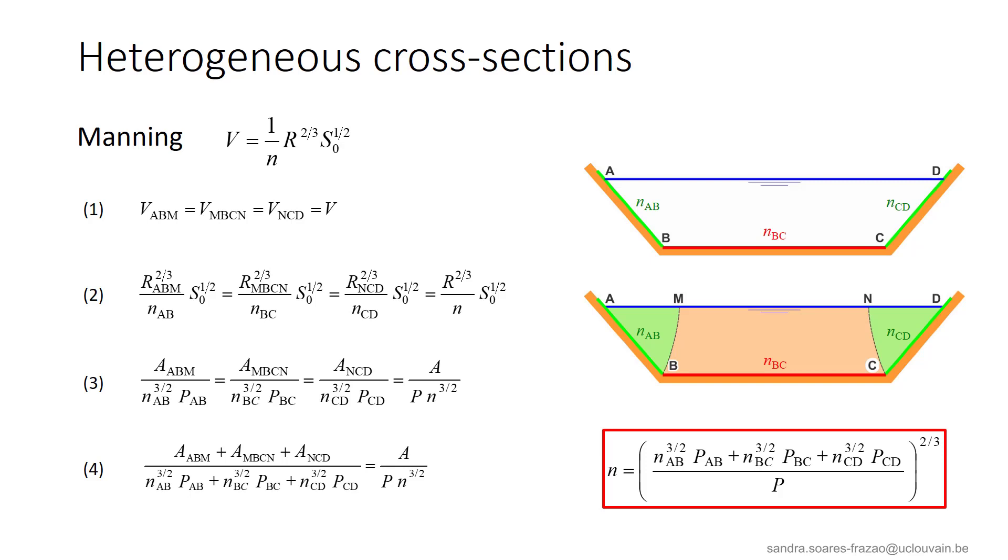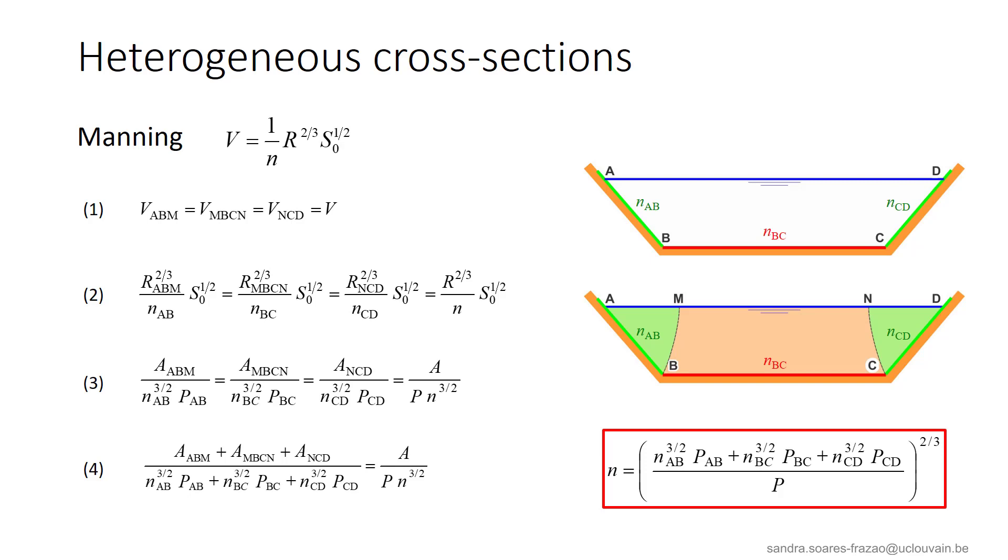So, from equation 4, we can isolate N, the equivalent Manning friction coefficient for this heterogeneous cross-section. This can be generalized to cross-sections with any number of heterogeneities, resulting in the equation here proposed by Einstein.